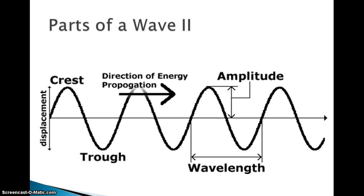You can also take the point where the wave crosses the equilibrium going upward, go to the next point where it's going upward, and that would be its wavelength. Make sure when measuring wavelength you're not measuring only half of it — going from one point on the equilibrium to the next point would only be half of the wave.